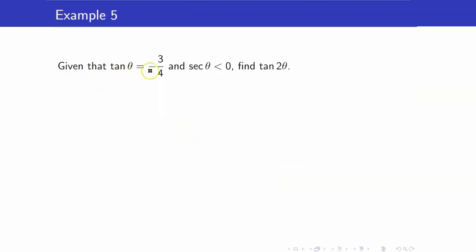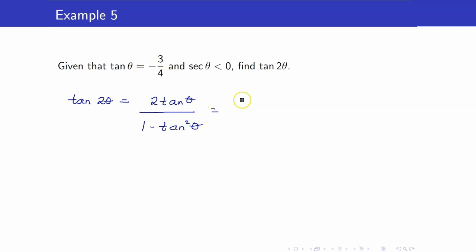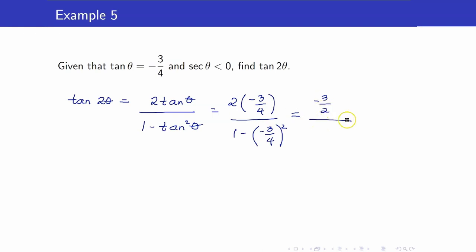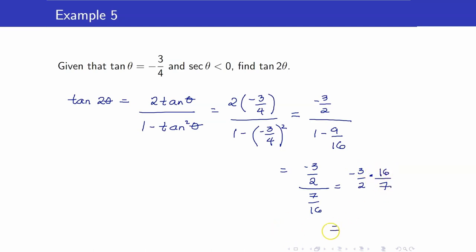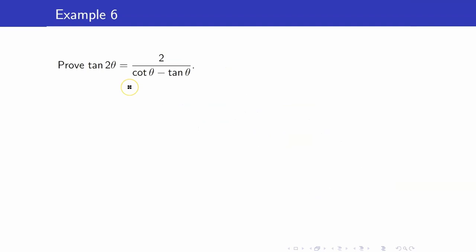For example, given that tangent theta is negative 3 fourths and secant theta is less than 0, find tangent of 2 theta. Using the formula, tangent 2 theta equals 2 tangent theta all over 1 minus tangent squared theta. Since we are given the value of tangent theta, it is just a matter of plugging in values. The numerator is negative 3 over 2, the denominator is 1 minus 9 over 16. Therefore, this equals negative 24 over 7.